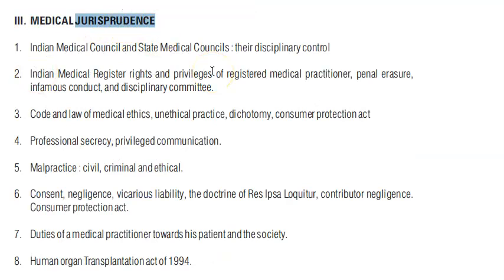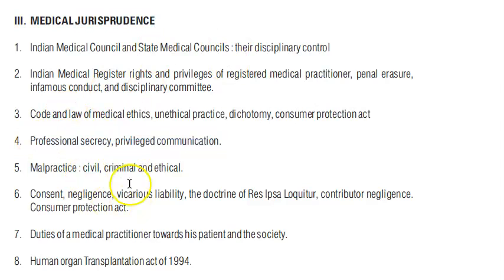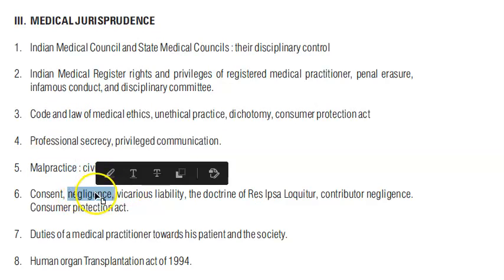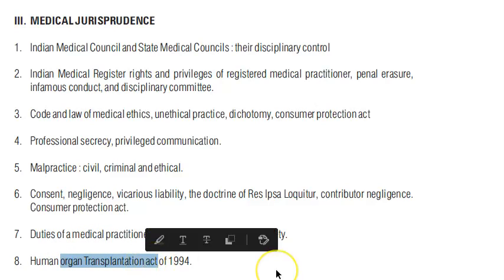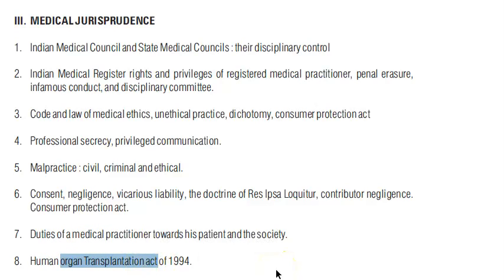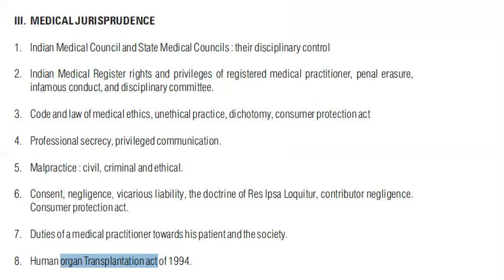Medical jurisprudence covers medical ethics, laws, and discipline. Topics include what ethics a doctor should have, privileged communication, professional secrecy, malpractice, negligence, punishment for negligence, and the doctor's defense in cases of negligence. The Organ Transplant Act is also covered - how an organ transplant is conducted and who is allowed to take part in it.